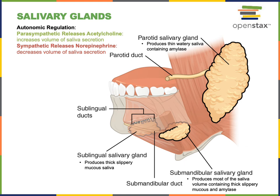While the parasympathetic division of the autonomic nervous system releases acetylcholine to stimulate the secretion of saliva, the sympathetic division releases norepinephrine, leading to a decreased volume of saliva secretion.